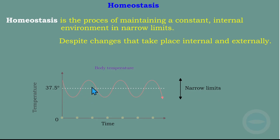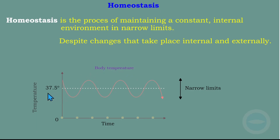Since some stimulus may affect the temperature, our body has to make sure that this temperature remains within narrow limits. For example, during respiration our body produces heat, which might affect our body temperature. Or it might happen that we sit in the sun where it's very hot — this may affect the body temperature again. Our body must make sure that our temperature remains at 37.5 degrees.